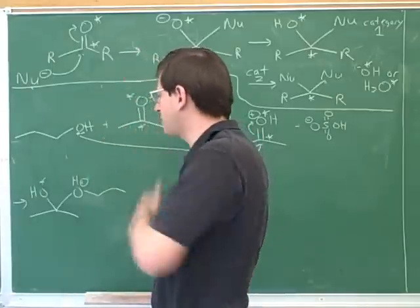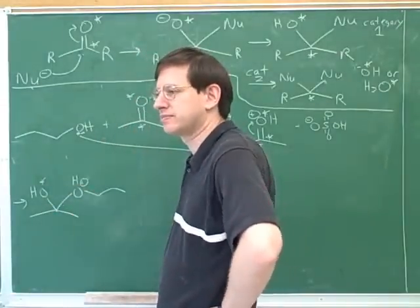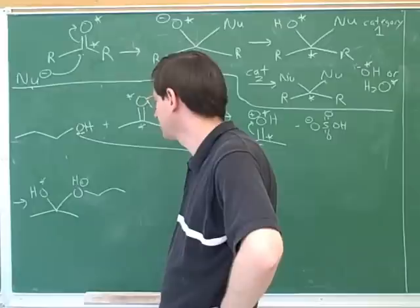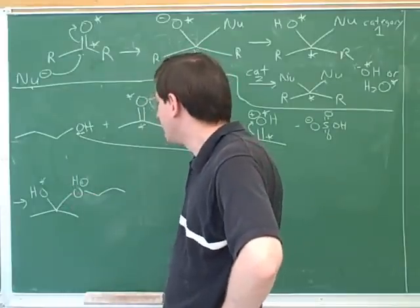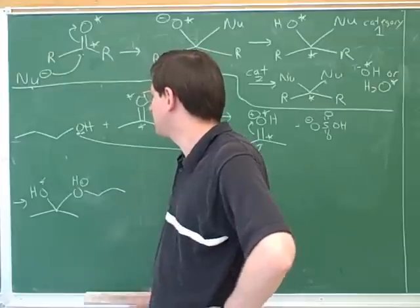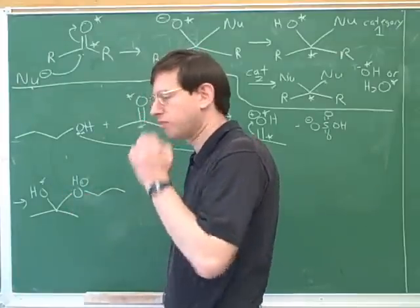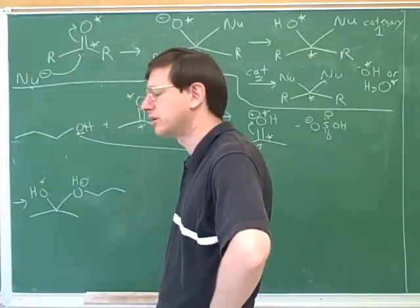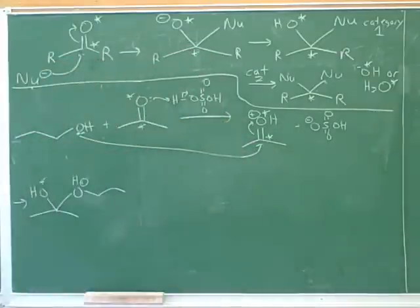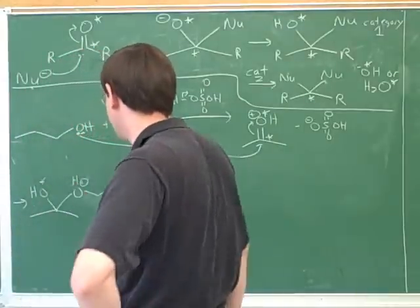All right, now who seems like the reactive atom in this product? The O plus. Yeah, anything with a charge is going to be unhappy. So what we should be thinking is that nature wants to do something to get rid of this charge. Well, what could we do to get rid of that charge? Deprotonation. Yeah, we could lose the proton. We can see that's the next step in the handout in parentheses again at the bottom of page one, the original nucleophilic atom is going to deprotonate. So now we're going to lose this proton.